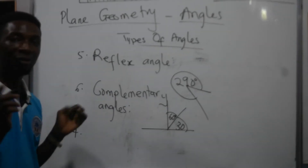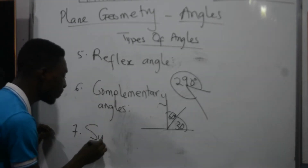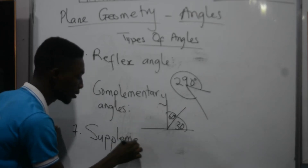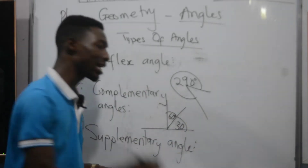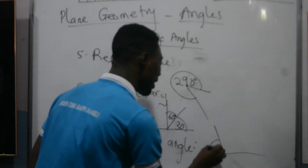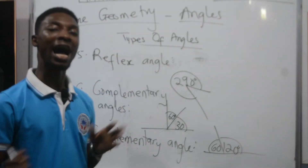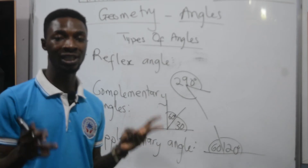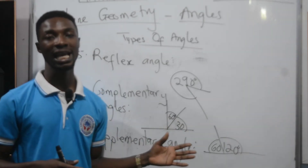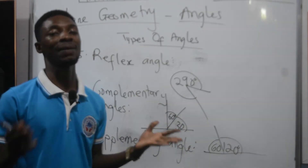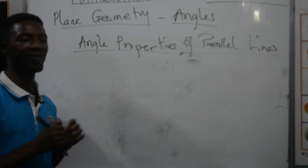We can also have supplementary angles. Two angles are supplementary when you add them and always get 180 degrees. Whenever you add two angles and the result yields 180 degrees, these two angles are referred to as supplementary angles, and the relationship between them is called a supplementary relationship. They always add up to 180 degrees.